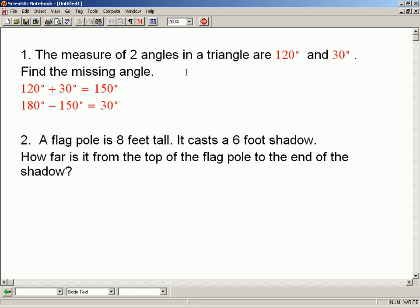Alpha square plus Bravo square equals Charlie squared.